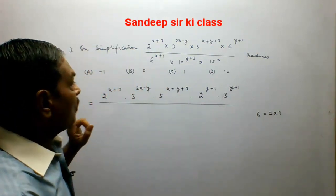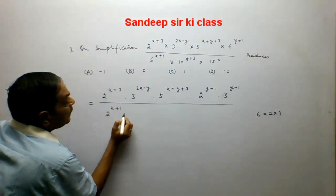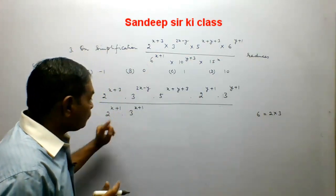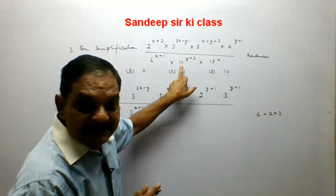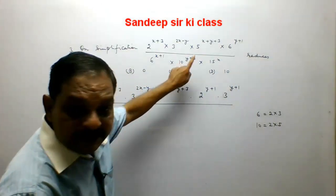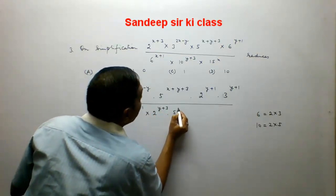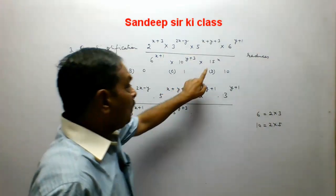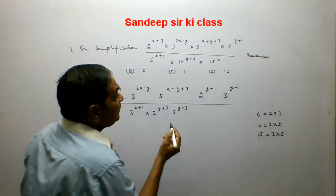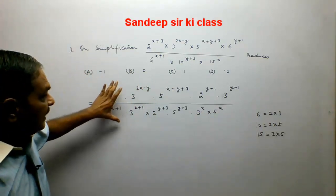In the denominator, we again have base 6, so we write 2 to the power x plus 1 into 3 to the power x plus 1 — writing 6 as 2 into 3. Base 10 can be written as 2 into 5, so 10 to the power y plus 3 becomes 2 to the power y plus 3 into 5 to the power y plus 3. And 15 to the power x — since 15 equals 3 into 5 — becomes 3 to the power x into 5 to the power x. The expression becomes like this.